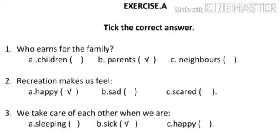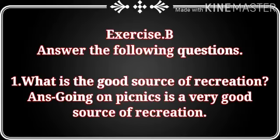Question number three: we take care of each other when we are — option A: sleeping, option B: sick, option C: happy. The correct answer is option B, sick. Now let us move to our next exercise, that is Exercise B — answer the following questions.